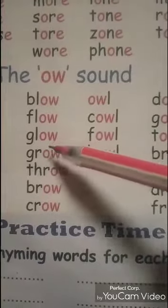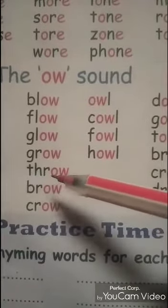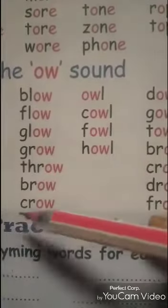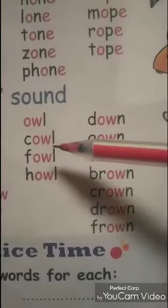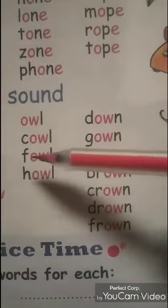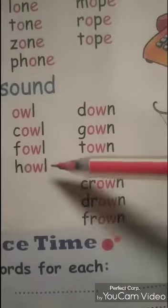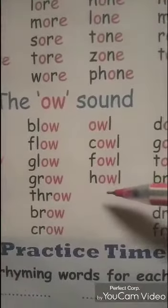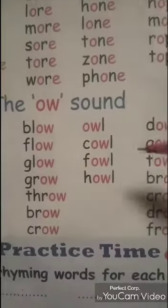G-L-O-W, Glow. G-R-O-W, Grow. T-H-R-O-W, Throw. F-O-W-L, Fowl. H-O-W-L, Howl. Owl. C-O-W-L, Cowl. F-O-W-L, Foul. H-O-W-L, Howl. These rhyming words sound at different types.